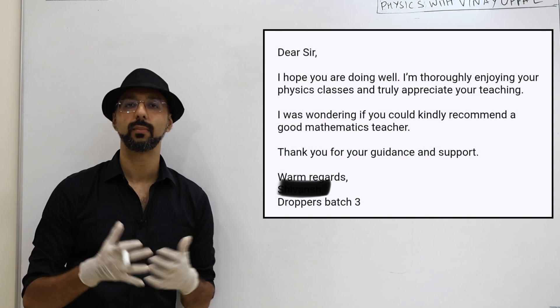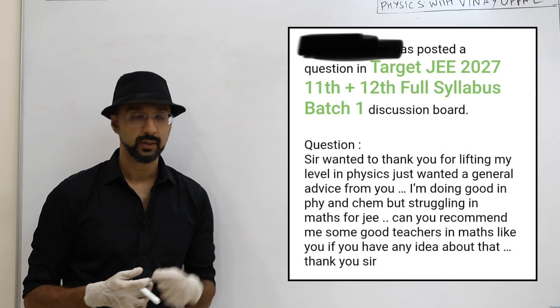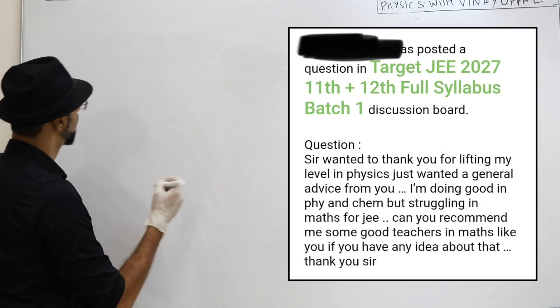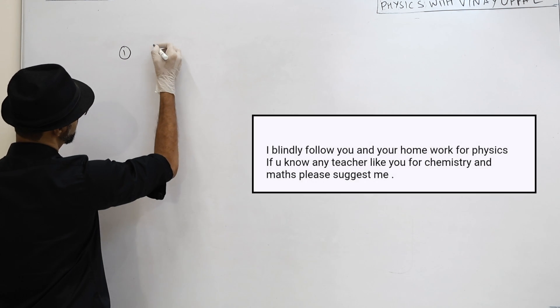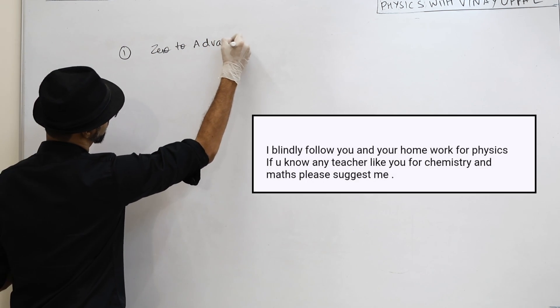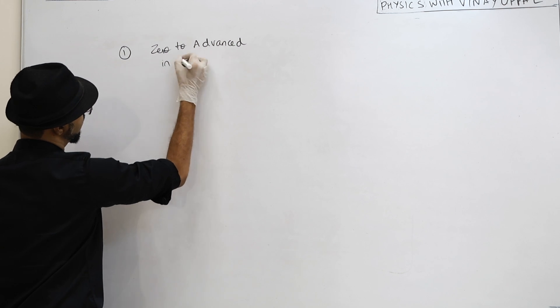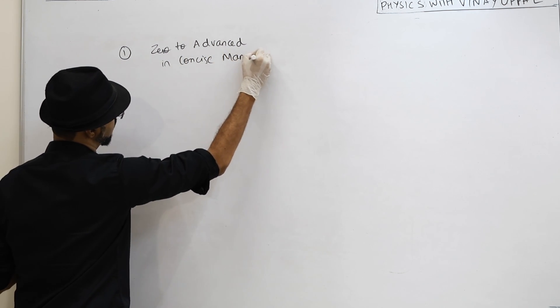So what do I mean by a chemistry or maths course exactly like mine? Three things. One is that the lectures must go from zero to advanced in a concise manner, detailed but concise.